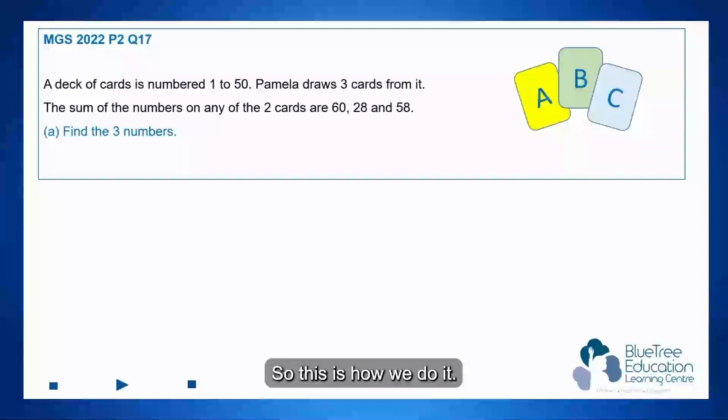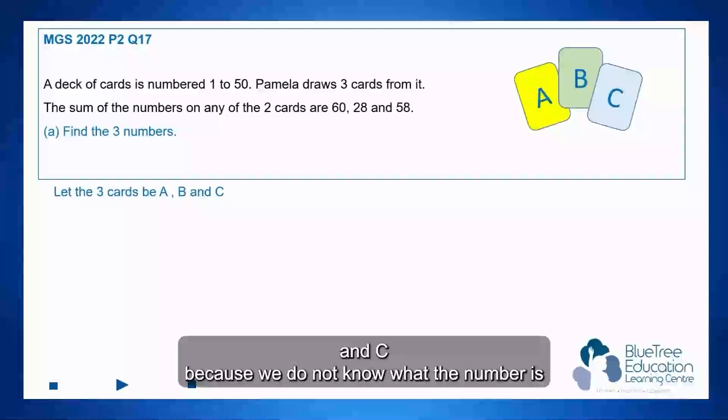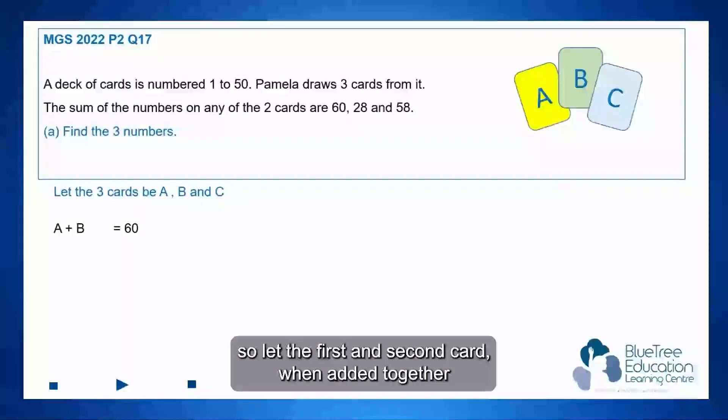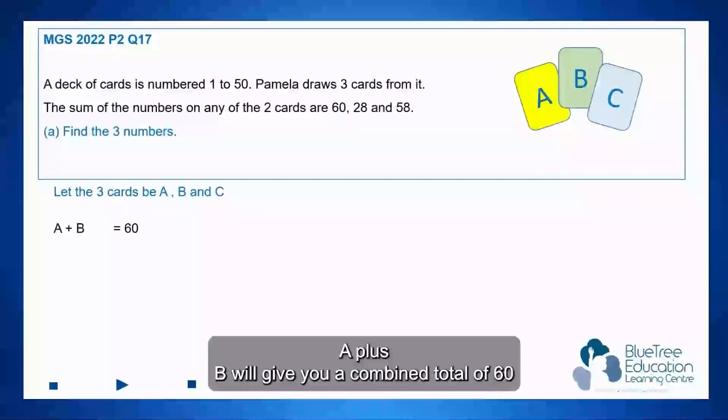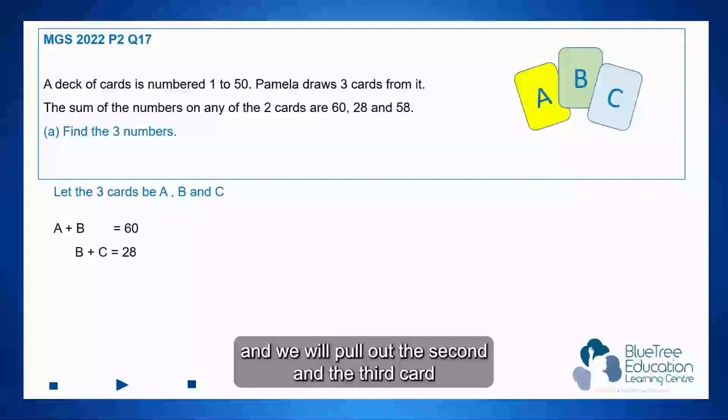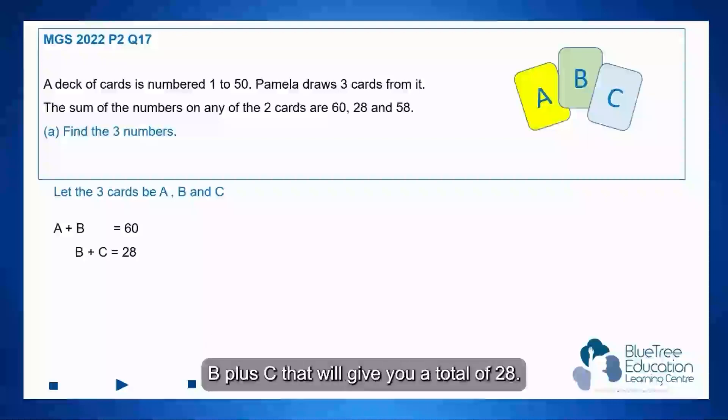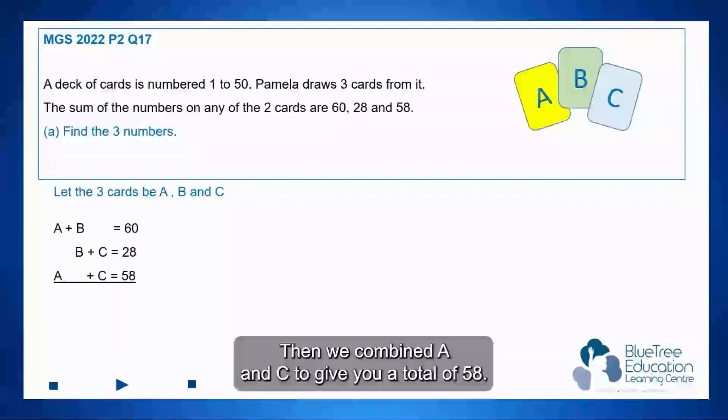So this is how we do it. We will let the three cards be A, B and C because we do not know what the number is. So let the first and second card, when added together, A plus B will give you a combined total of 60. And we will pull out the second and the third card, B plus C, that will give you a total of 28. Then we combine A and C to give you a total of 58.